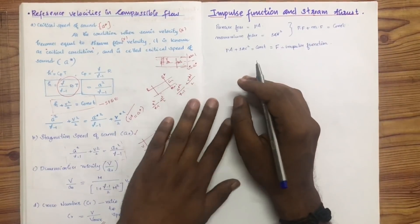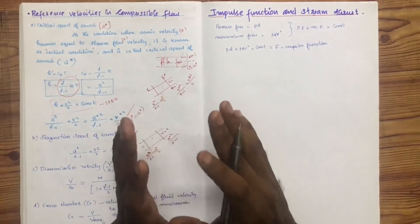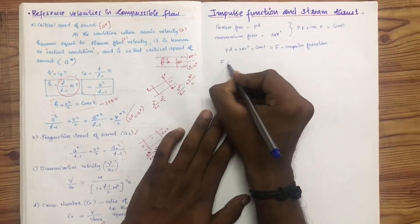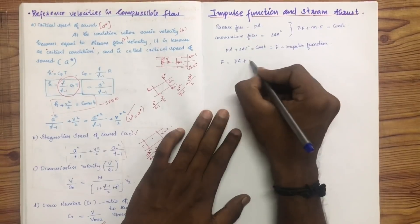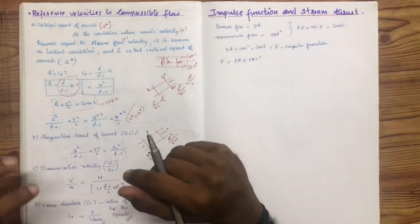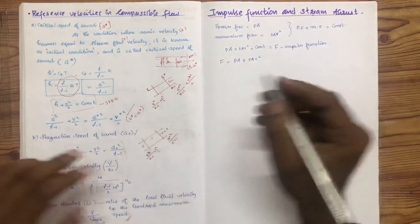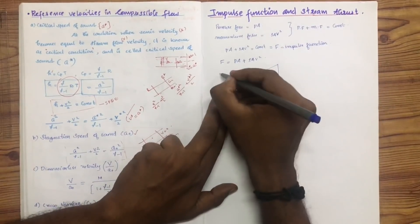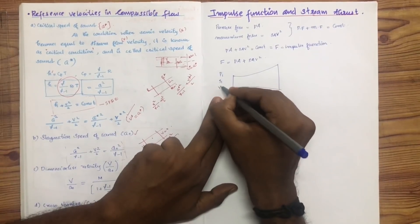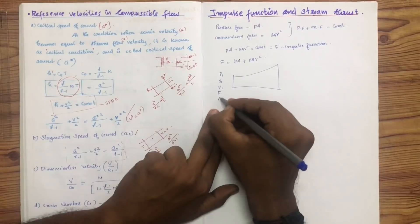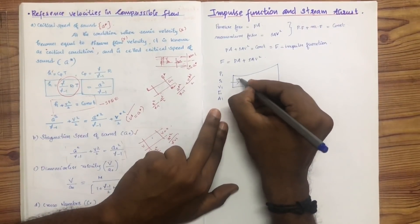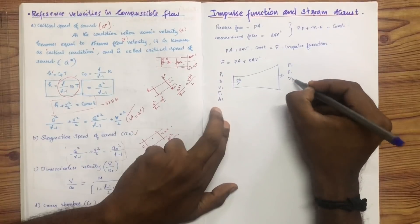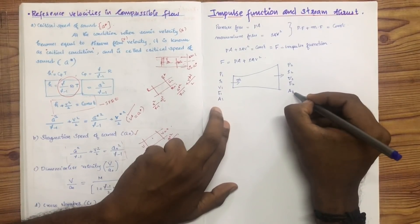The impulse function F equals P times A plus rho A V squared. Applying this to a streamline: at the inlet, pressure is P1, density is rho1, velocity is V1, and impulse function is F1, with mass flow rate M-dot. At the outlet, pressure is P2, density is rho2, velocity is V2, impulse function is F2, and area is A2.